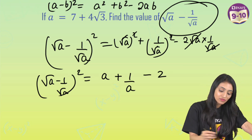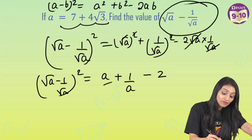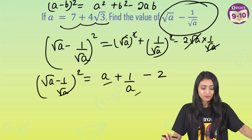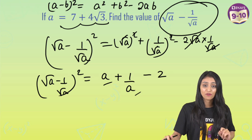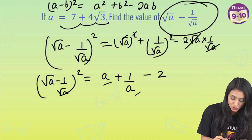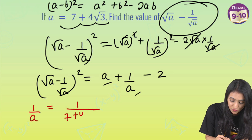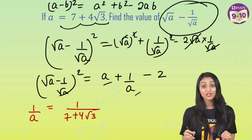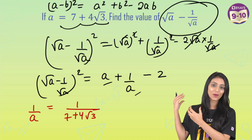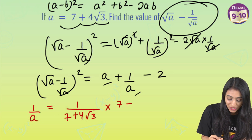So (root a minus 1 by root a) squared equals a plus 1 by a minus 2. Now if I have the value of a — which is given in the question — and I find 1 by a, I can simplify this very easily. So let's find out 1 by a: that's going to be 1 upon 7 plus 4 root 3.